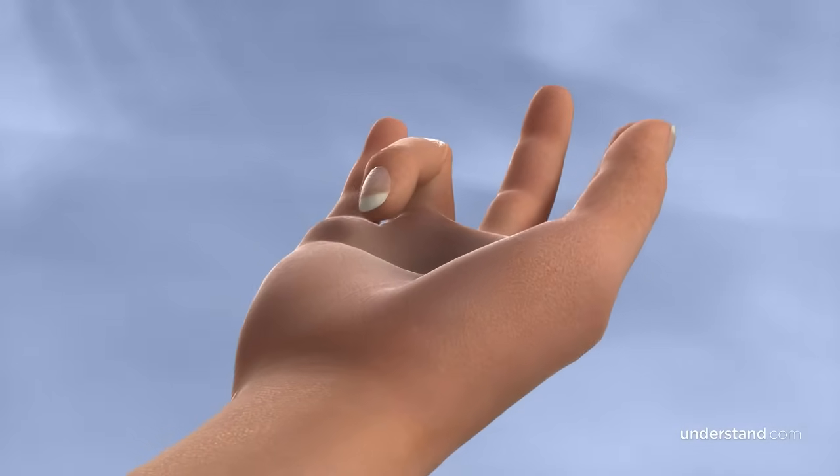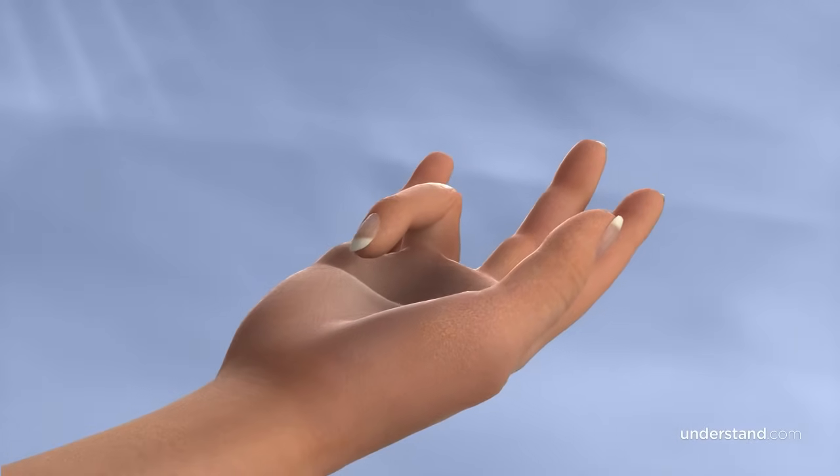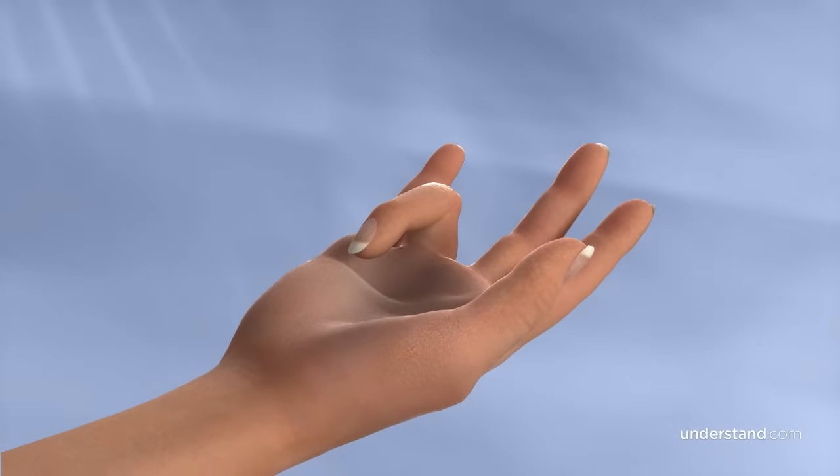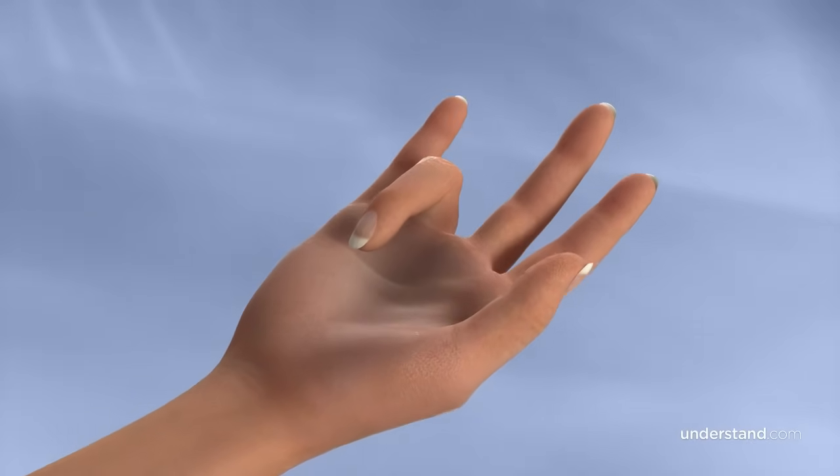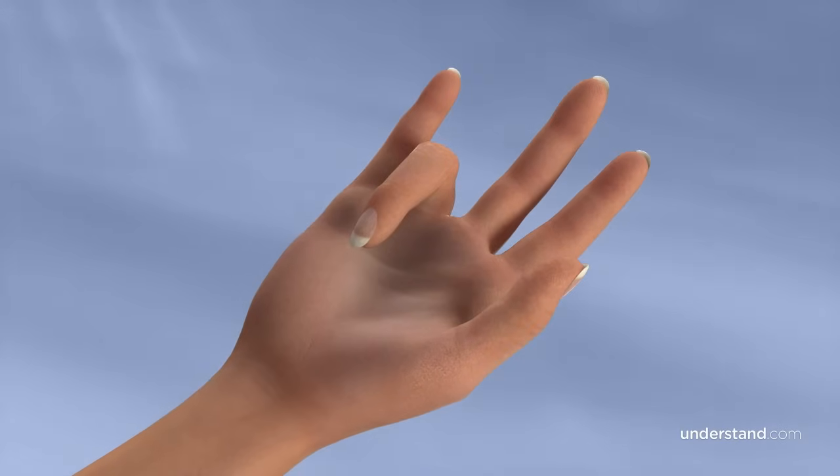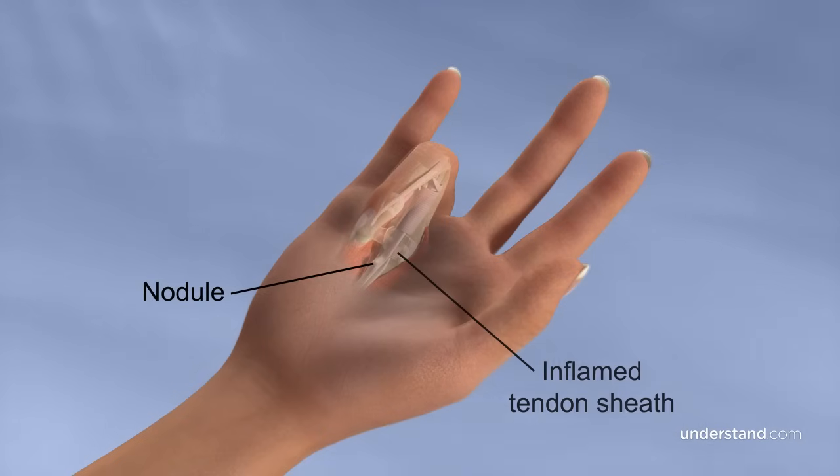Trigger finger, also known as stenosing tenosynovitis, occurs when one of the tendons responsible for bending a finger or the thumb develops a thickening, known as a nodule, and inflammation in the tendon sheath.